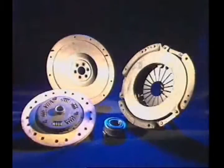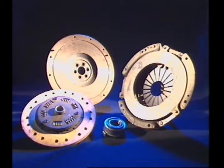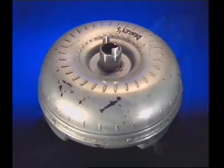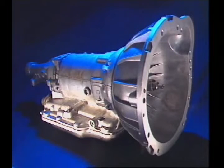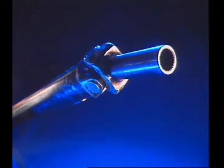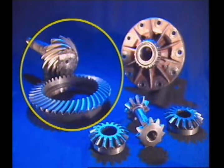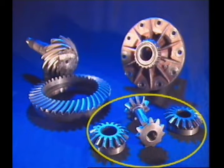The drivetrain transfers turning effort from the engine to the driving wheels. A drivetrain can include a clutch for manual transmission, or a torque converter for automatic transmission, a transmission, a drive shaft, a final drive, and differential gears.